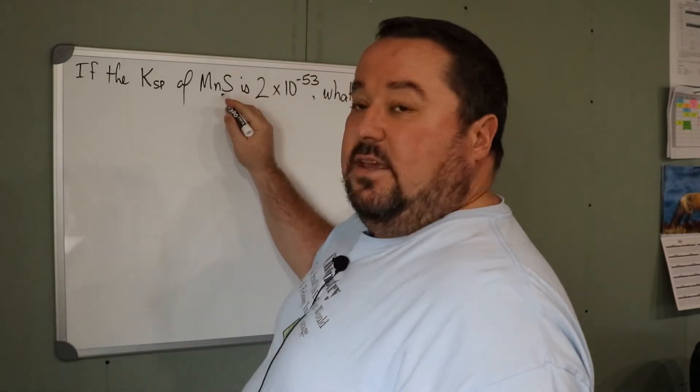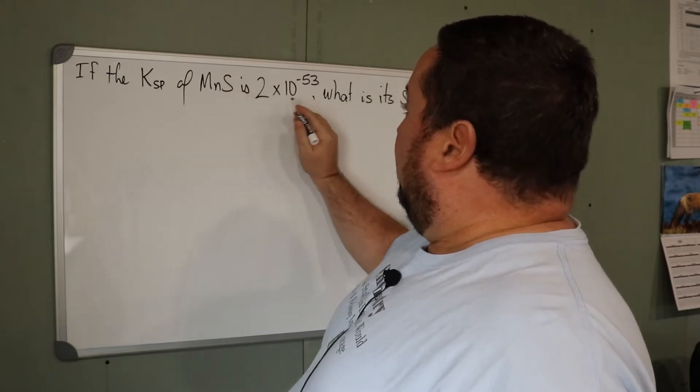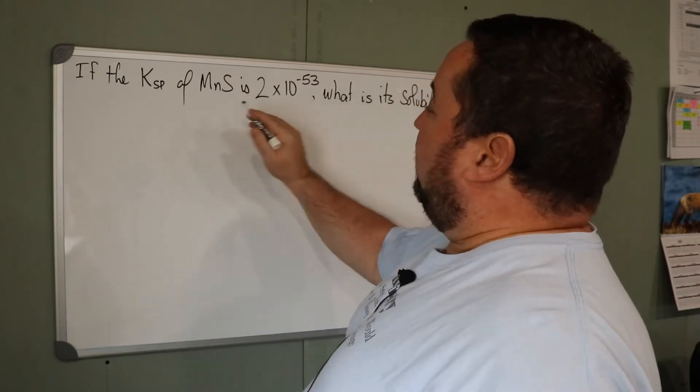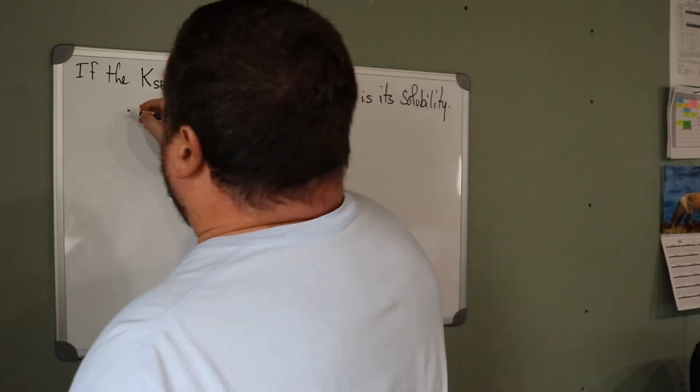Here we have manganese(II) sulfide. We're given its Ksp. After the solubility, we're going to begin by writing the dissociation equation.